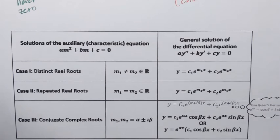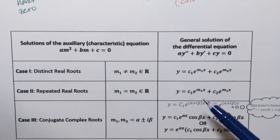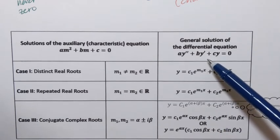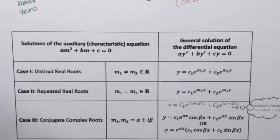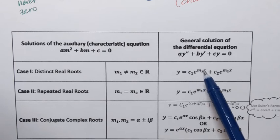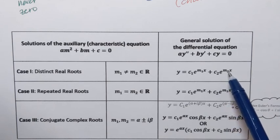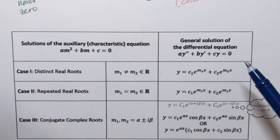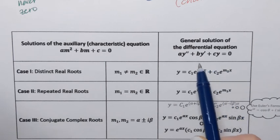In the case of two distinct real roots, the general solution to the second order differential equation looks like this: c1 and c2 are the arbitrary constants, and the two real roots appear as the exponents. So it's c1 e to the power m1 x plus c2 e to the power m2 x, where m1 and m2 are the actual real numbers from solving the auxiliary equation.